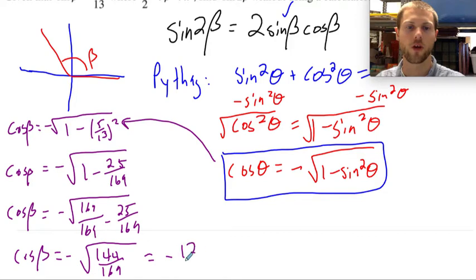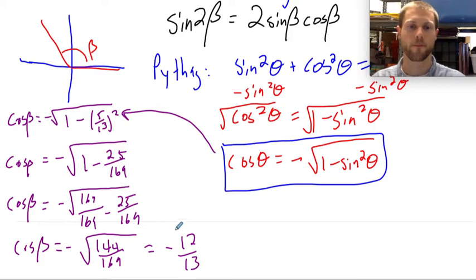This is going to equal negative 12 over 13. Great, that is my cosine of beta. So let's just kind of box that. That's kind of important.